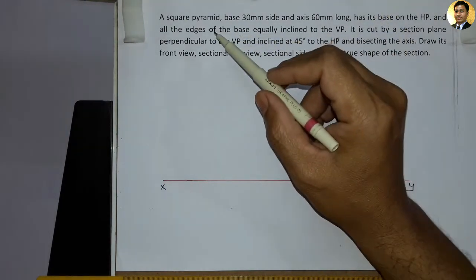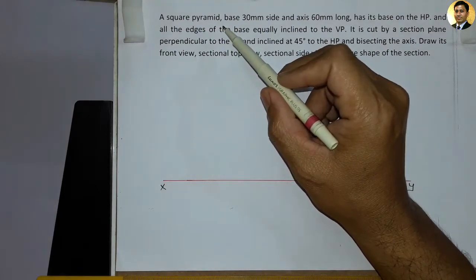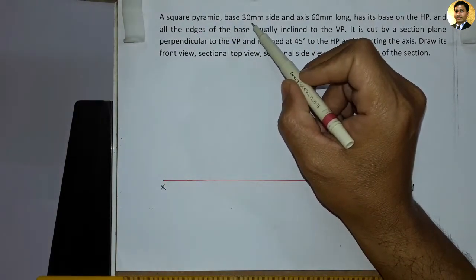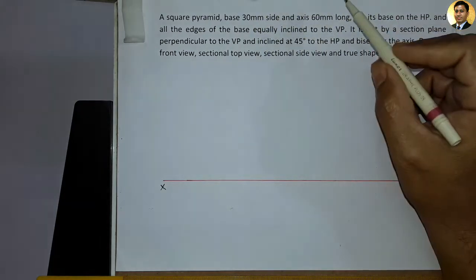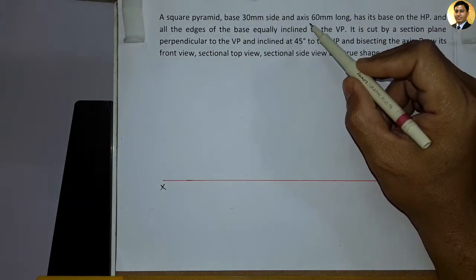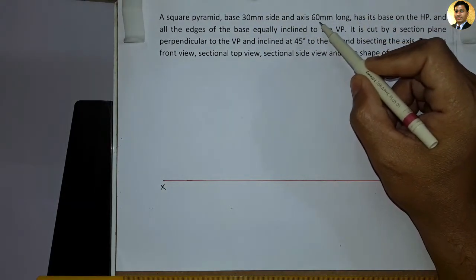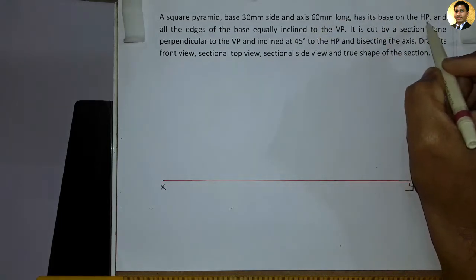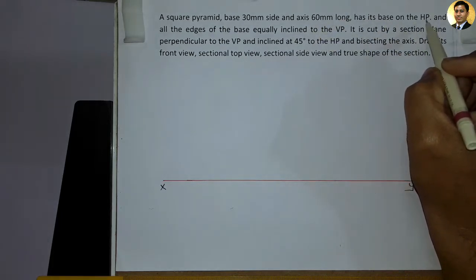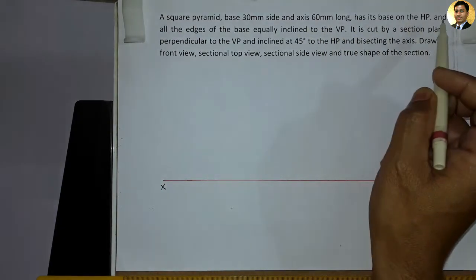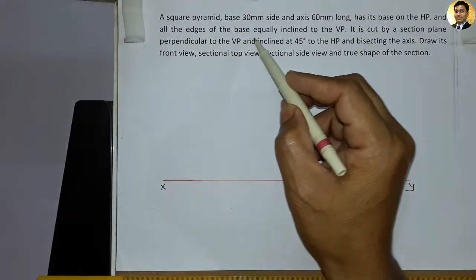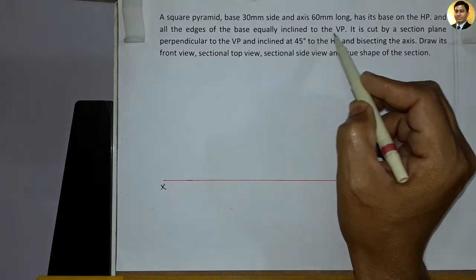So here we have data where we have a square pyramid which has a base size of 30 mm and an axis height of 60 mm. This pyramid is based on the horizontal plane. Here we have a special condition: all the edges of the base are equally inclined to the VP.